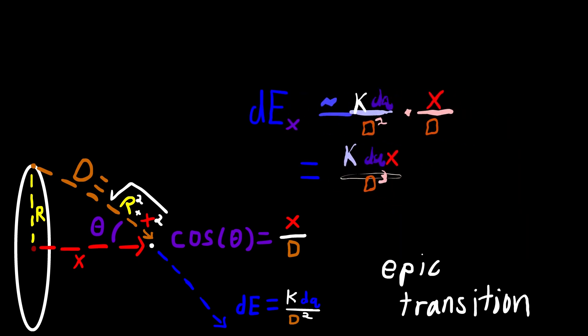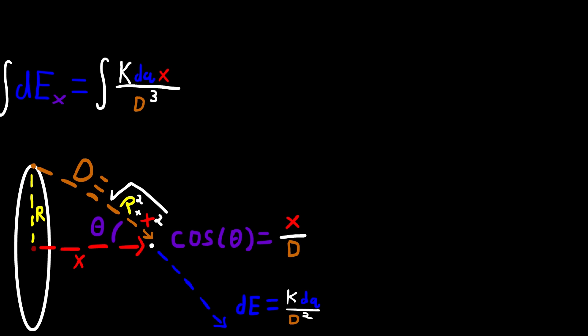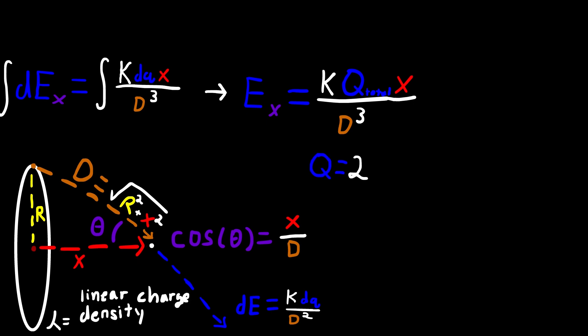Following this, we will take the integral of the derivative of energy in the x direction. Afterwards, we will convert q total to 2 pi r, which is equivalent to the circumference, and multiply it by lambda, the linear density charge.